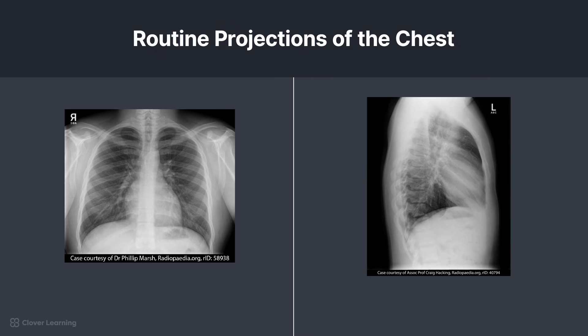In summary, the routine radiographic projections of the chest include the PA and lateral. Obtaining clear, diagnostic-quality images of the chest can help identify fractures and other pathologic conditions. Identifying and recognizing the relevant anatomy is the first step in ensuring the evaluation criteria are met.